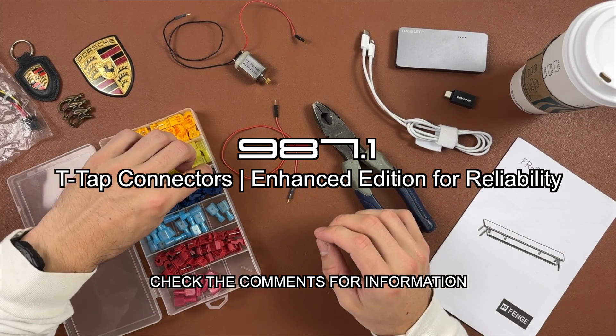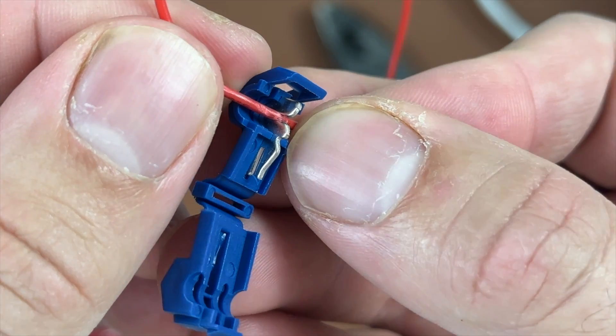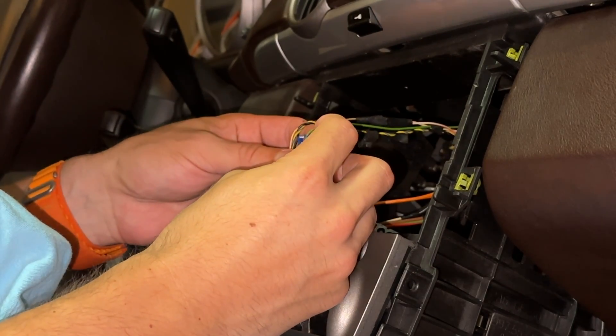T-junction connectors, or T-taps, are particularly useful for plug-and-play applications like head unit installations, where the existing wires get tapped into, forming a T.